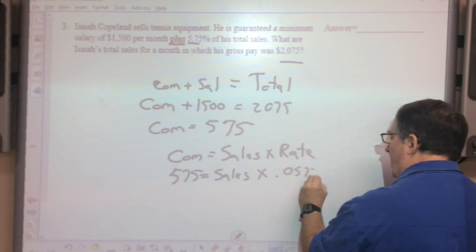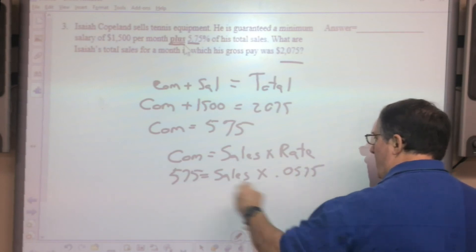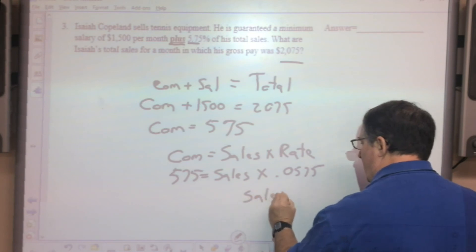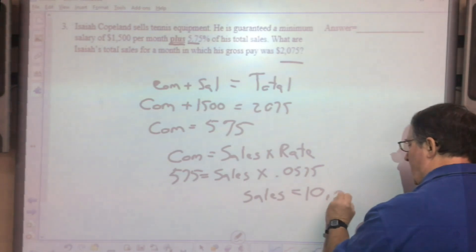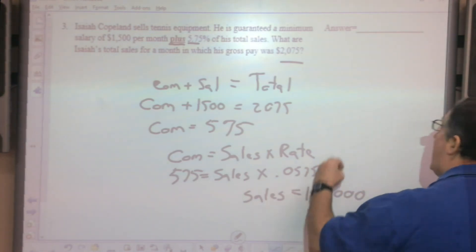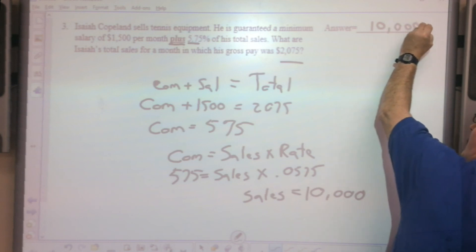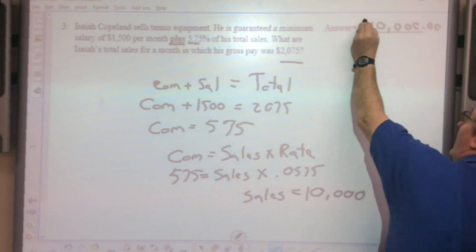Remember this is a percentage. You can do it in a calculator or you can just move the decimal place over. To solve for sales, divide both sides by 5.75 percent or 0.0575. The amount of sales is ten thousand dollars worth of sales, so that is your total sale.